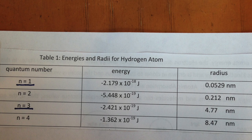Refer to table 1 in your lab handout. Let's look at what happens when the electron in the hydrogen atom transitions from an excited state, n equals 3, to ground state, n equals 1.